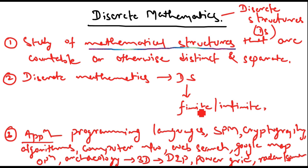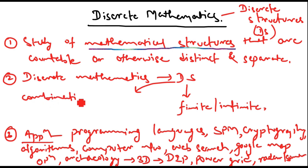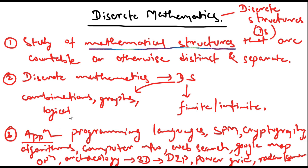When I mentioned that discrete structures can be finite or infinite, you might wonder which structures these are. The structures include combinations, graphs, and logical statements, and so on. These structures are finite or infinite and are studied using discrete mathematics.